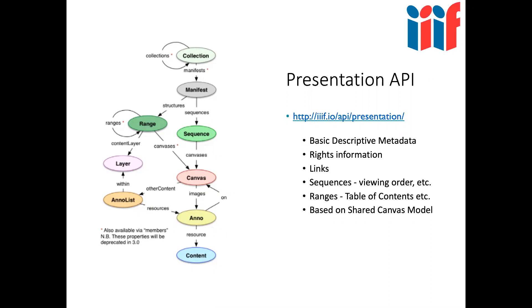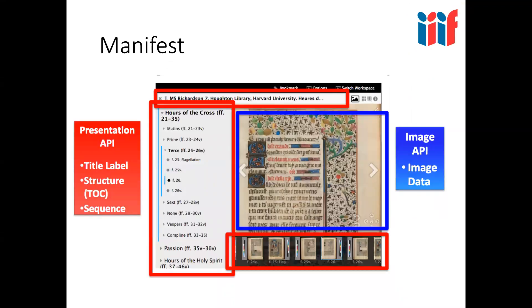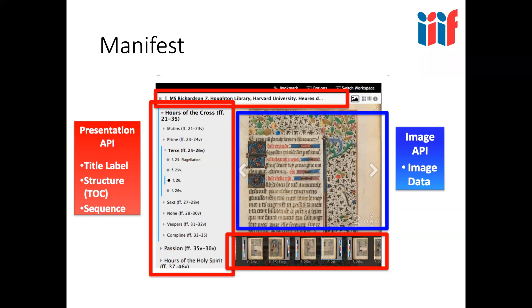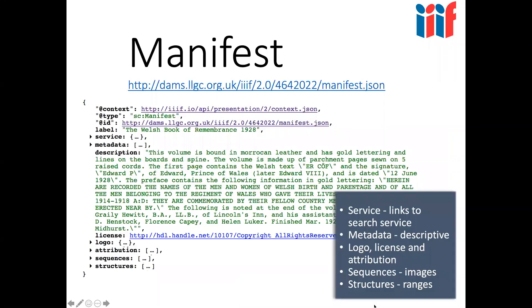If we look at a manifest in Mirador, everything in blue comes from the IIIF Image API — the main manuscript image allowing deep zoom, and the thumbnails. But it's all brought together using the Presentation API. Presentation API features include the label, the table of contents, and the order of the pages, and then it links to the IIIF Image API. Here's an example from the National Library of Wales shown in a format called JSON-LD.